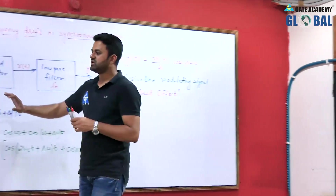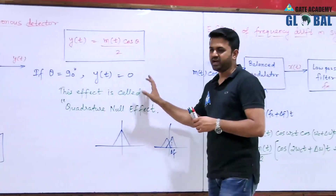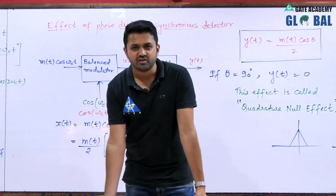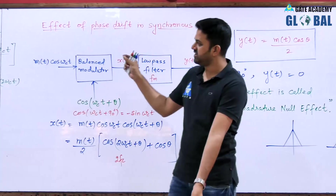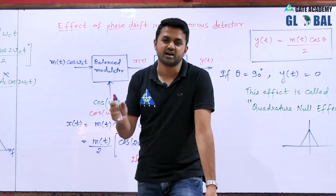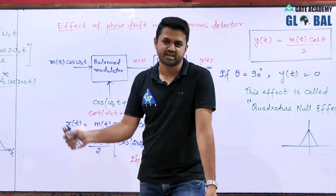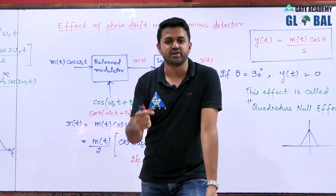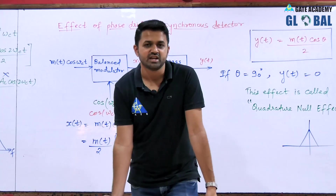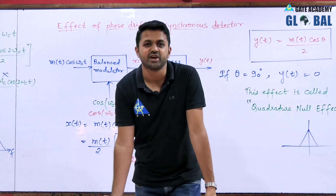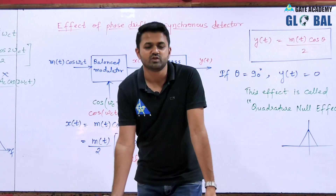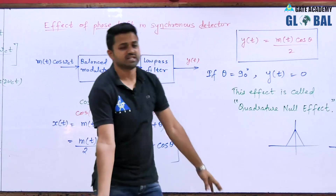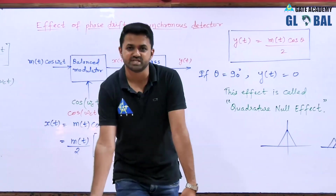In both cases we have undesirable effects. To recover the message signal correctly, we have to synchronize the locally generated carrier with the transmitted carrier. Then only can we recover our message signal without distortion. Alternatively, we have to keep the phase error very, very small so that the effect is negligible. But if there is a large phase error of 90°, the output will be zero and we cannot recover our message signal.